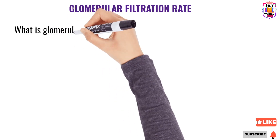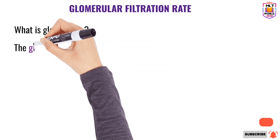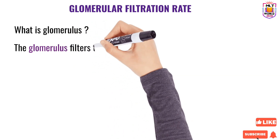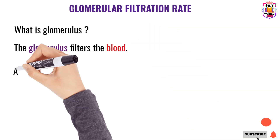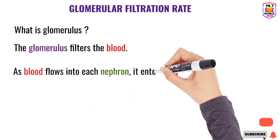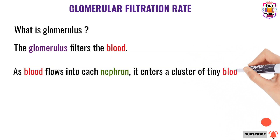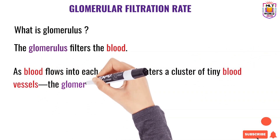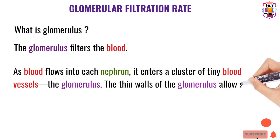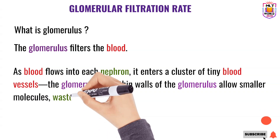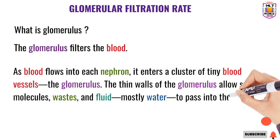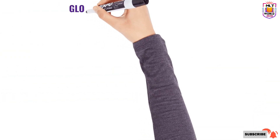To understand the glomerular filtration rate, first we have to understand what is the glomerulus. The glomerulus is a cluster of capillaries present in the C-shaped Bowman's capsule, and the main purpose of the glomerulus is to filter the blood. As blood flows into each nephron, it enters into this cluster of tiny blood vessels or capillaries. The thin wall of the glomerulus allows only small molecules — waste, fluid, and mostly water — to pass into the tubules, where urine is made.